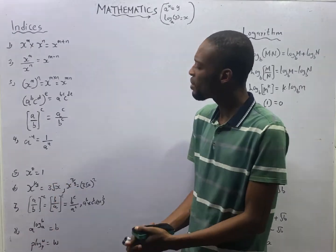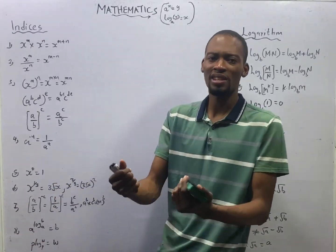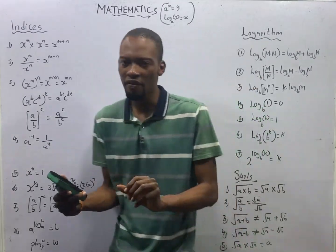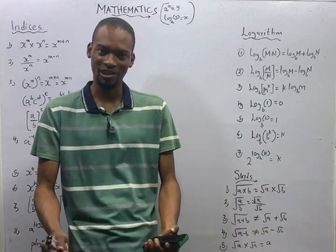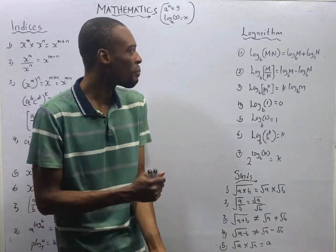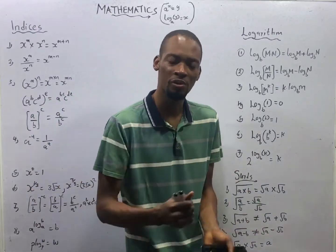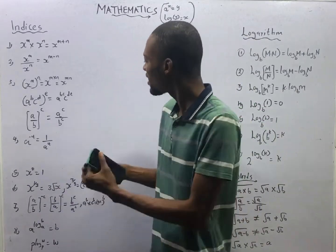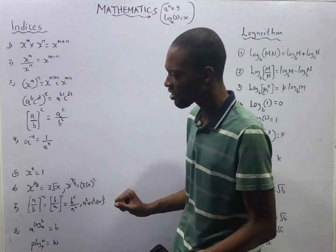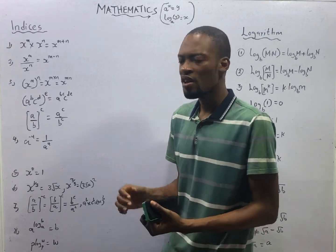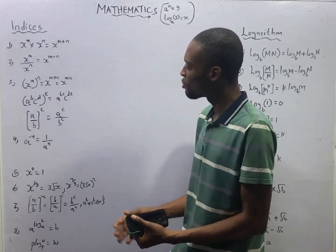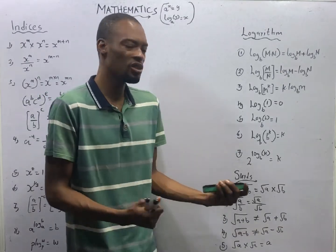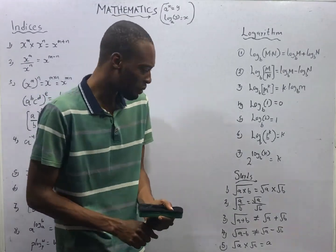The reason many persons have problems in mathematics is that they don't have the background or the foundation. The background includes number and numeration, approximation, percentage, business mathematics, indices, logarithms, and surds. I will do my best to make sure that you understand what indices, logarithms, and surds are about.